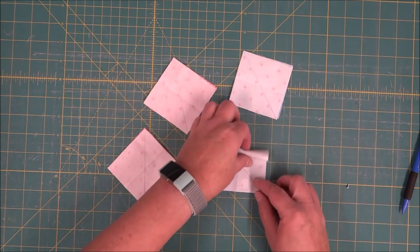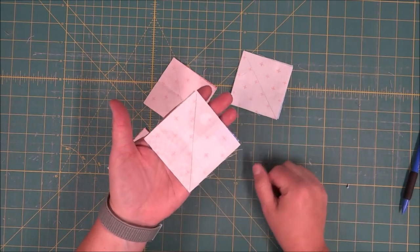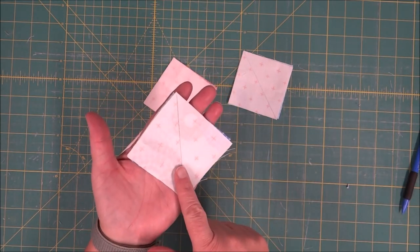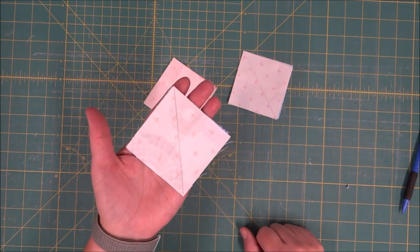What we're going to do is stitch on both sides of the drawn line and then cut on the drawn line so we can have our two half square triangles.